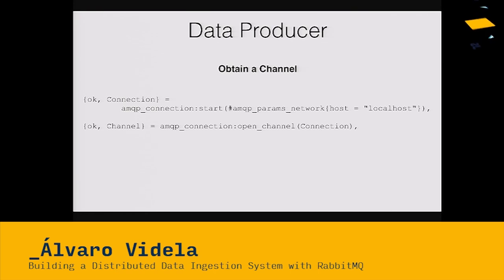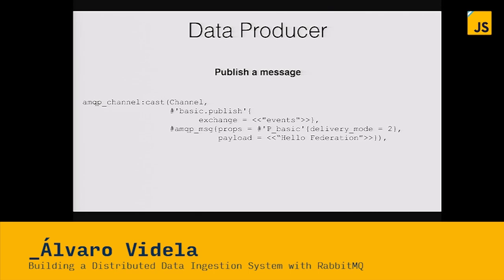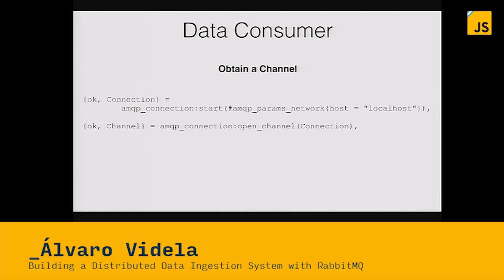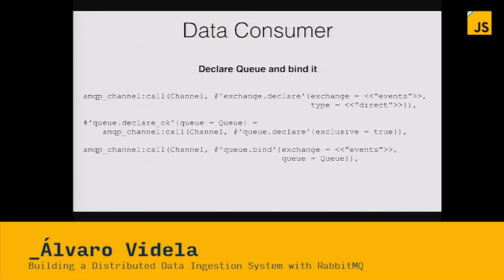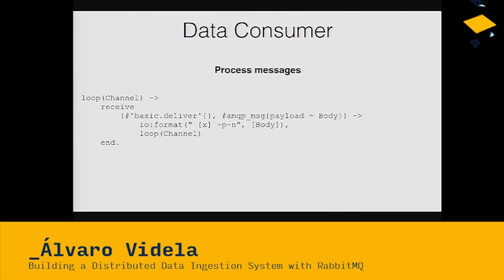This code looks like JavaScript but it's actually Erlang — sorry for showing some Erlang. How do you send data to Rabbit? You get a connection and a channel. Once you have a channel, you send a command saying 'exchange declare' with the exchange name and type — direct in this case. Then you do a basic publish to the exchange with some properties and a payload. On the consumer side, you get a connection and channel, create an exchange and a queue, bind the queue to the exchange, then tell Rabbit to start consuming messages.